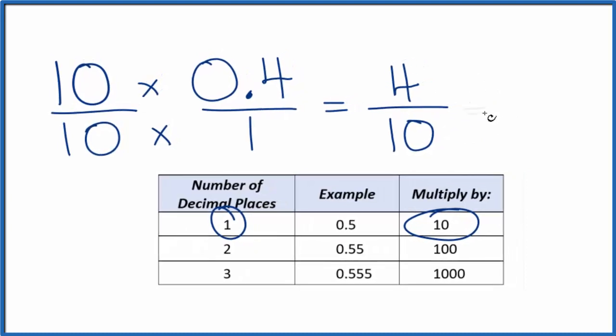We could reduce this down further. 4 divided by 2 is 2. 10 divided by 2 is 5. So 2 fifths, and we can't simplify that any further. So the decimal 0.4 is equal to the fraction 2 fifths.